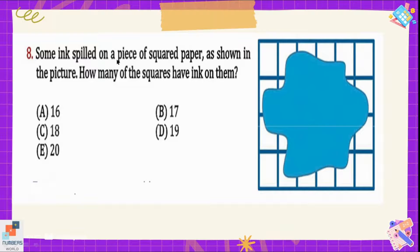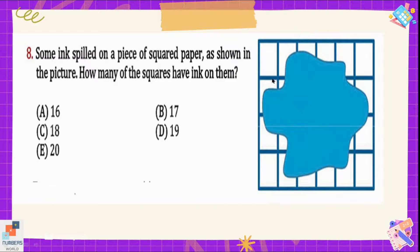Question number eight: some ink is spilled on a piece of squared paper as shown — how many squares have ink on them? Let's count the boxes: 6 plus 6 is 12, plus 6 is 18, plus 6 is 24, so there are 24 boxes in total. Ink is not spilled on the corners, and since there are four corners we subtract 4 from 24: 24 minus 4 is 20. Option E is the correct answer — ink has spilled on 20 boxes.